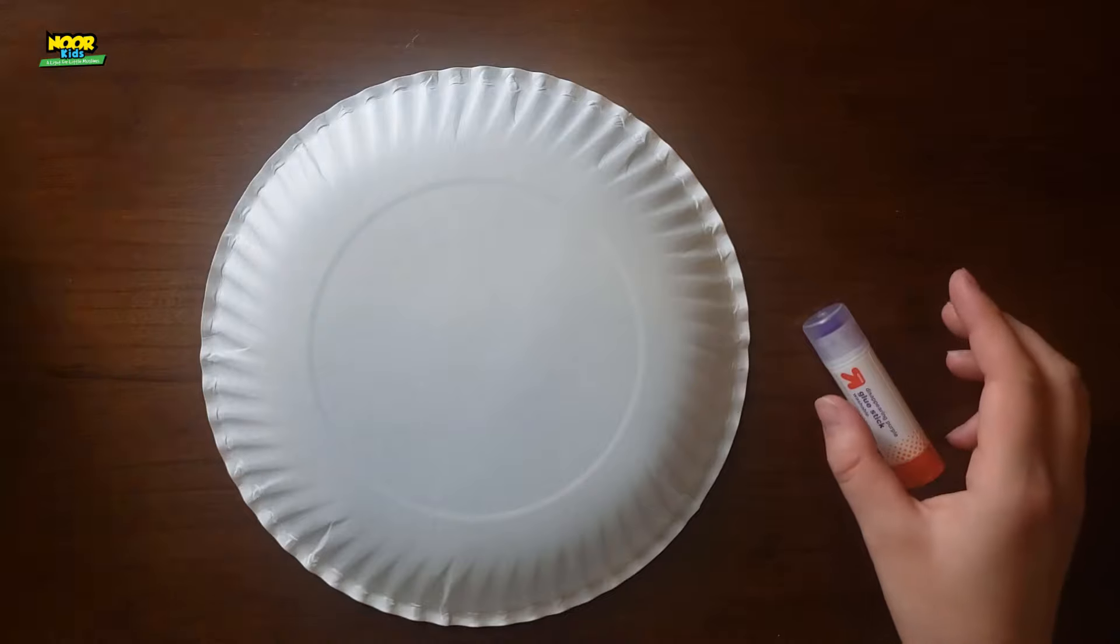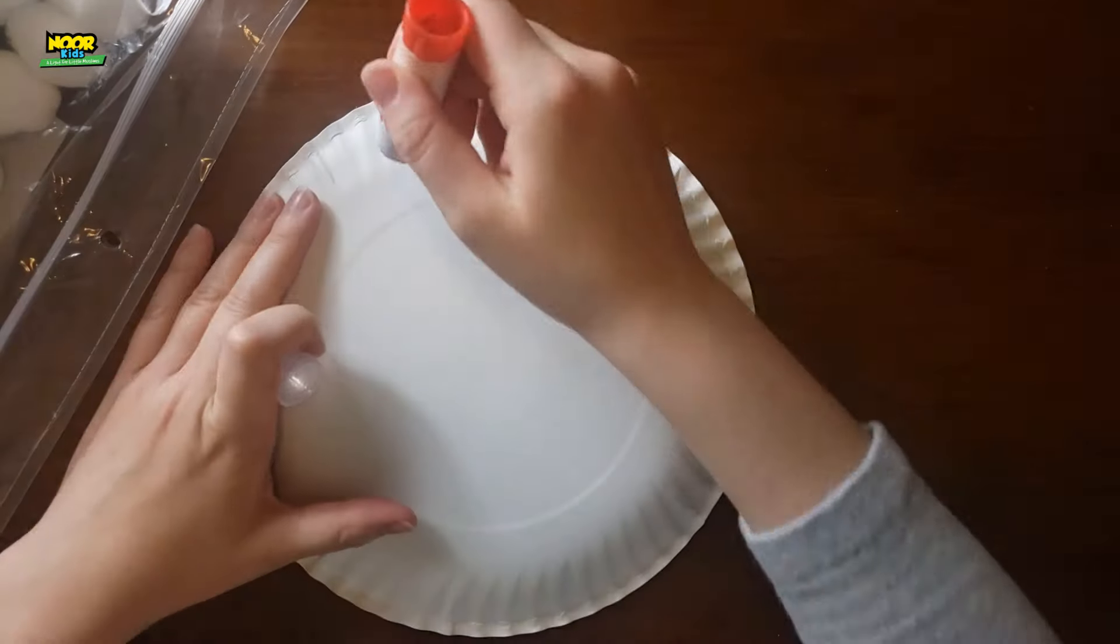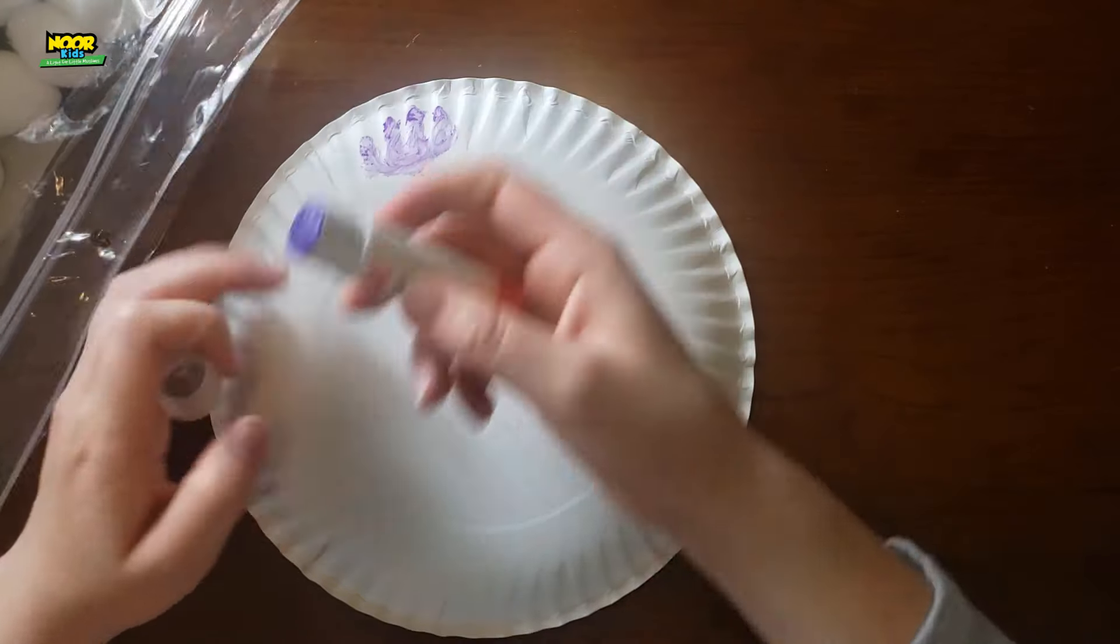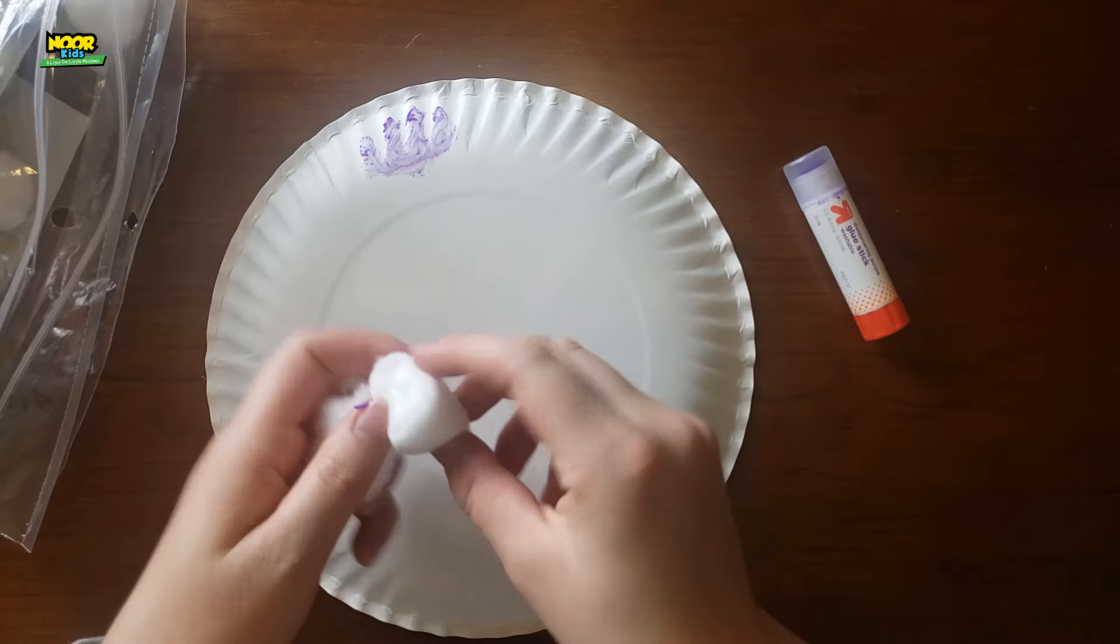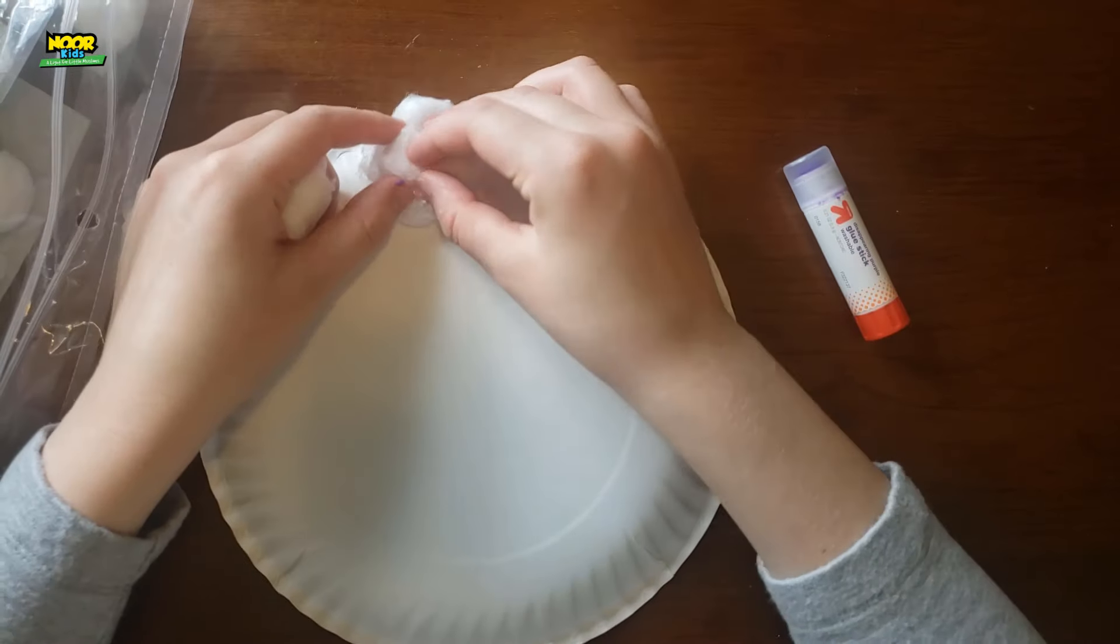Start off with a paper plate and get out some glue and some cotton balls. Put a little spot of glue on your paper plate. Get one of those cotton balls and stretch it out so it's nice and fluffy. Then glue it onto the paper plate.